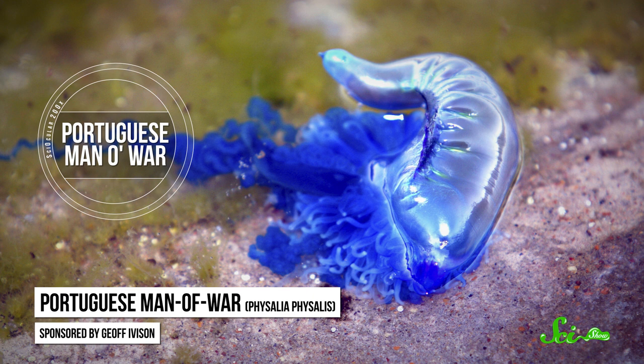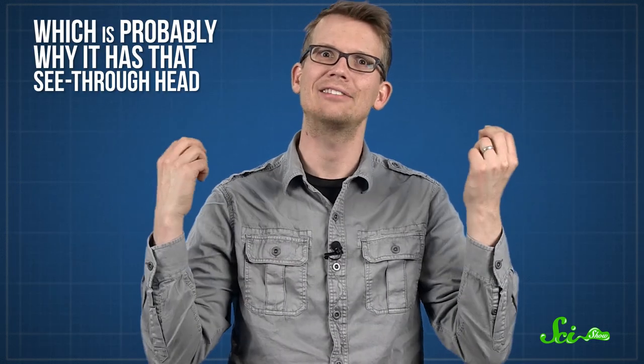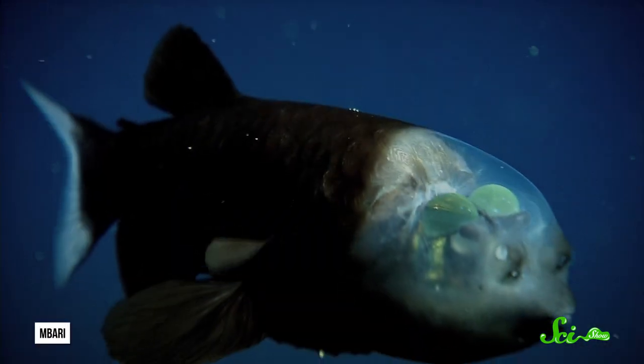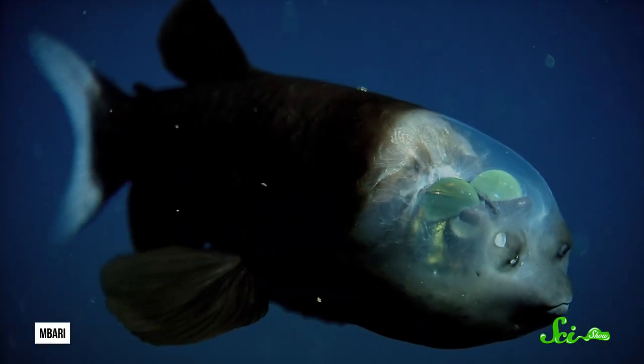But once the fish has spotted its next meal, it can have trouble chasing it down. Researchers think that barrel-eye fish steal their food from siphonophores, which often have tentacles with a powerful sting. A sting to a giant, sensitive, light-collecting eye would not be a fun time for the barrel-eye fish, which is probably why it has that see-through head. The head is filled with fluid forming a shield that protects the eyes from any stinging tentacles.